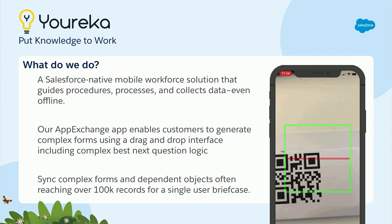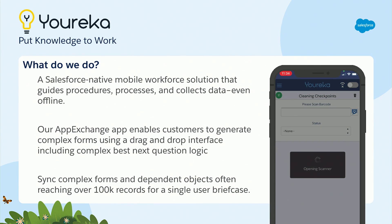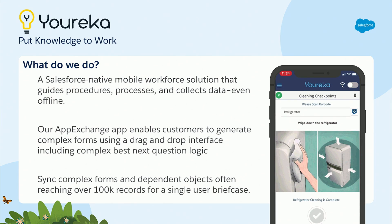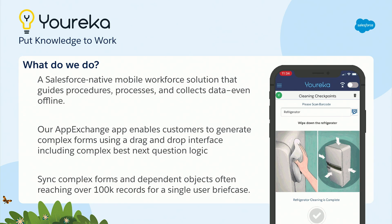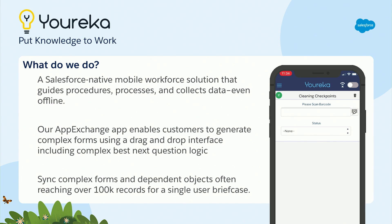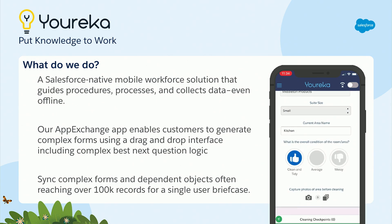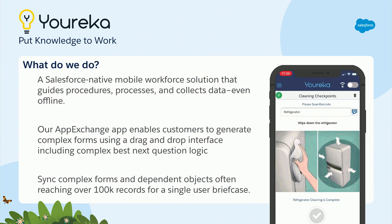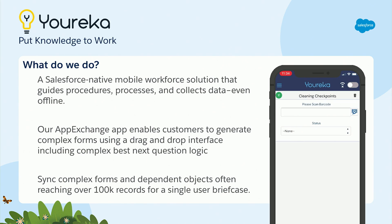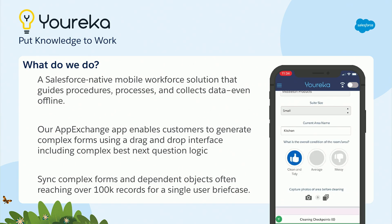If you're a field service tech getting ready to go out in the field, you need all your data primed before you go. You may have no connectivity or intermittent connectivity, so you need to have all that data available just in case. They'll be syncing data like work orders, accounts, work order line items, service appointments, and product catalogs. We have customers syncing over 100,000 records just for a single day.